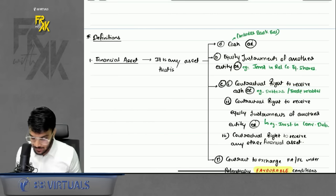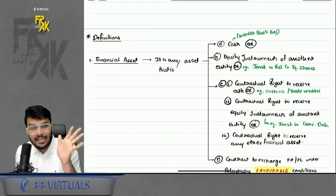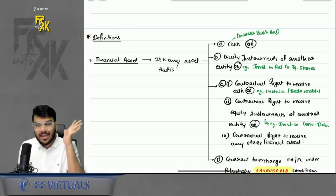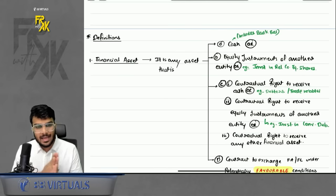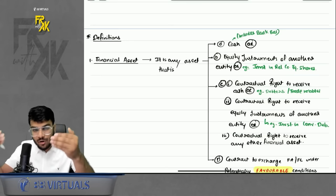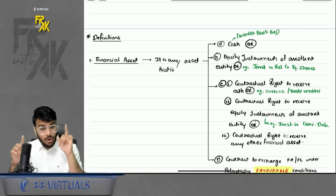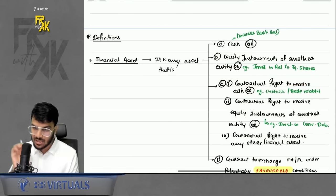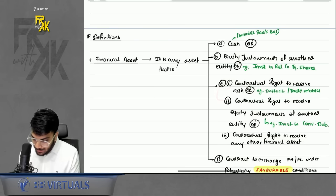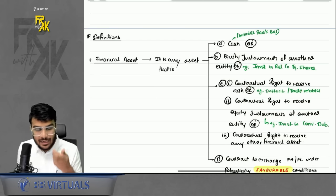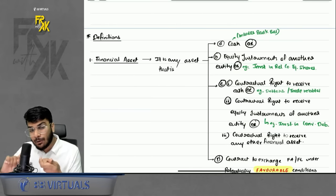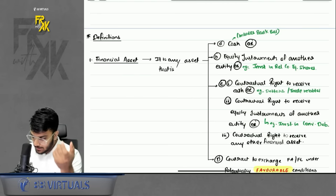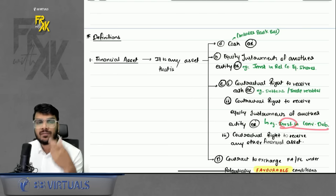C1 is a contractual right to receive cash. For example, debtors — when you make a sale on credit, you have a contractual right to receive cash from that party. C2 is a contractual right to receive equity instruments of another entity — for example, when you invest in a convertible debenture.